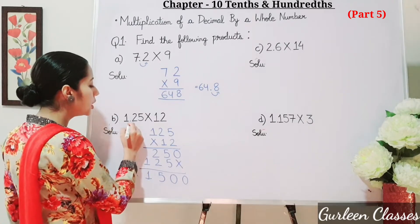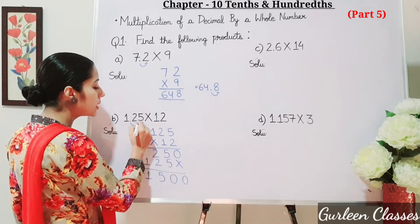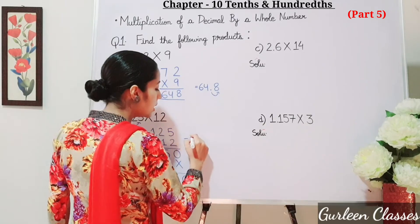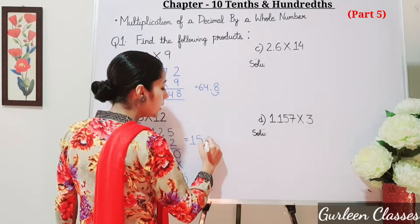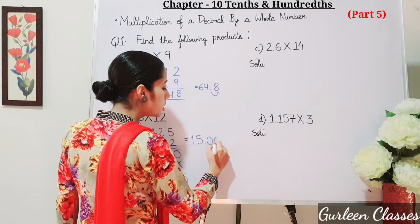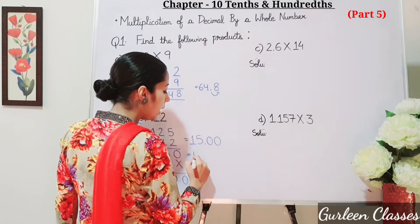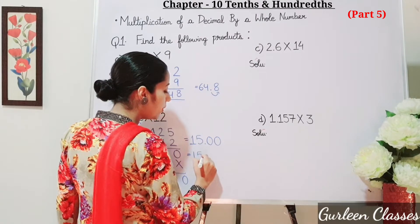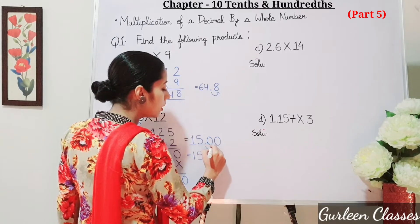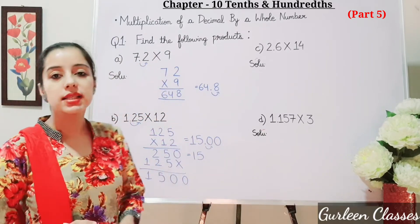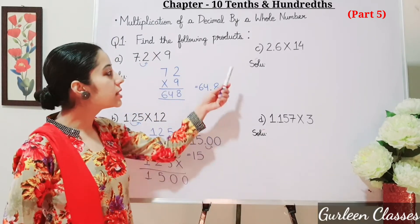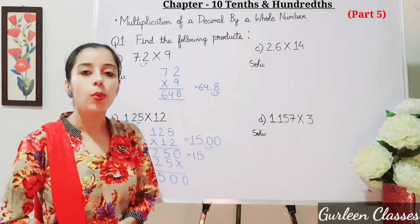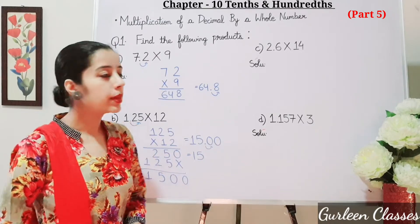So now let us place the decimal point. See the question — after the decimal point, how many digits are there? 1, 2. So the answer is 15.00, or we can write only 15, because after the decimal point the digits are 0, 0. So the answer is 15.00.